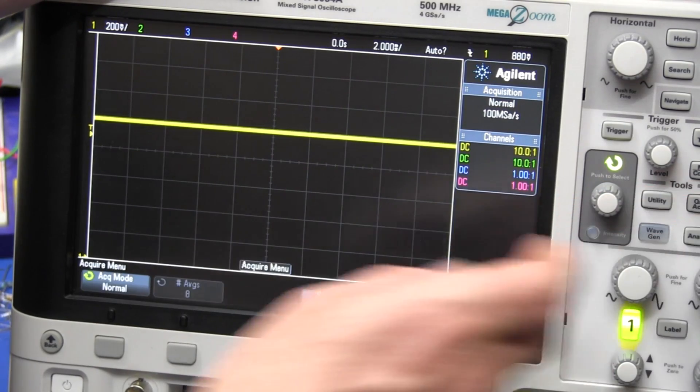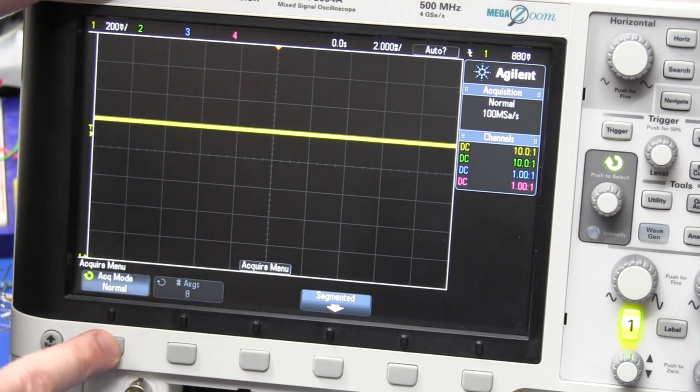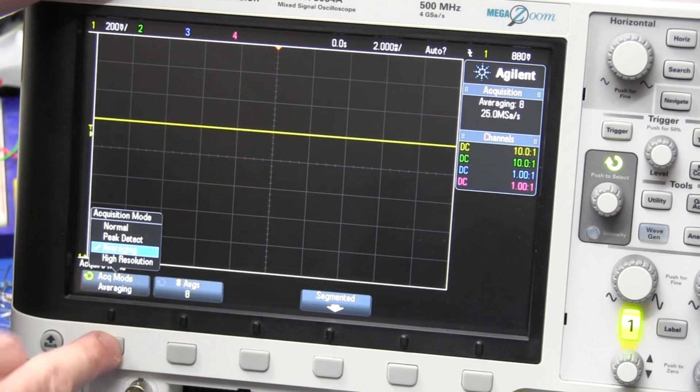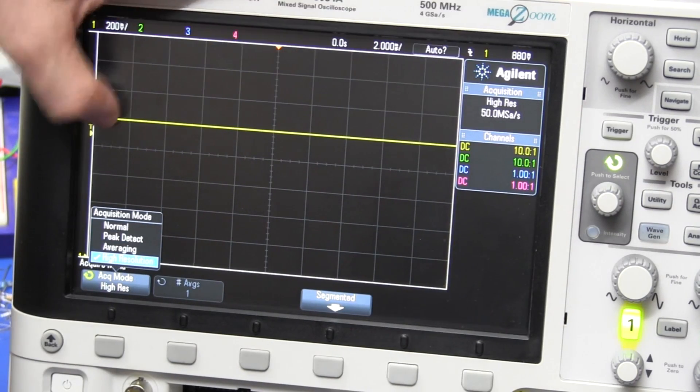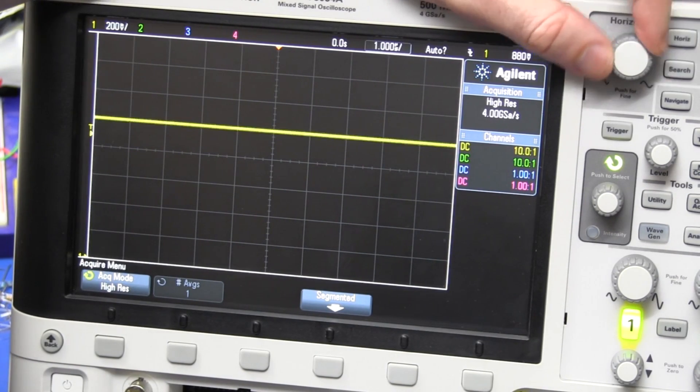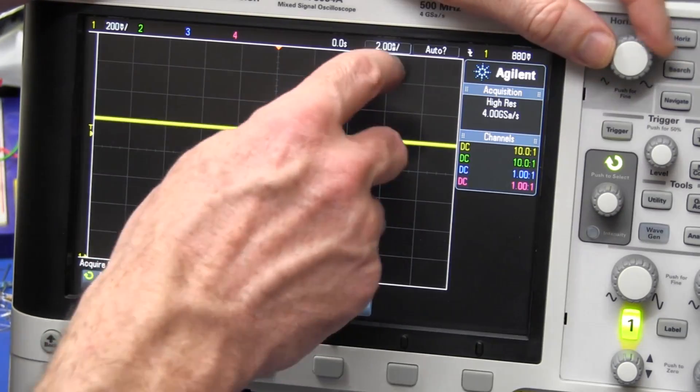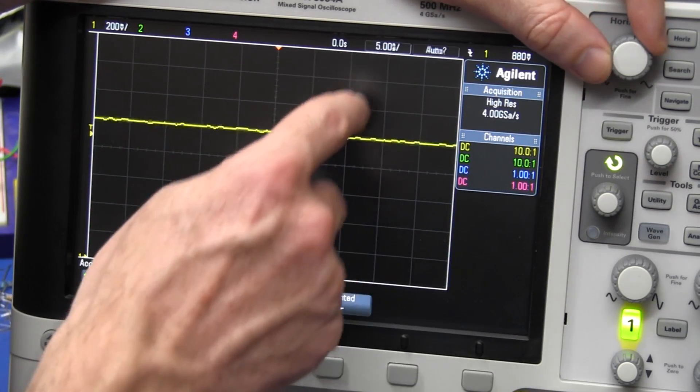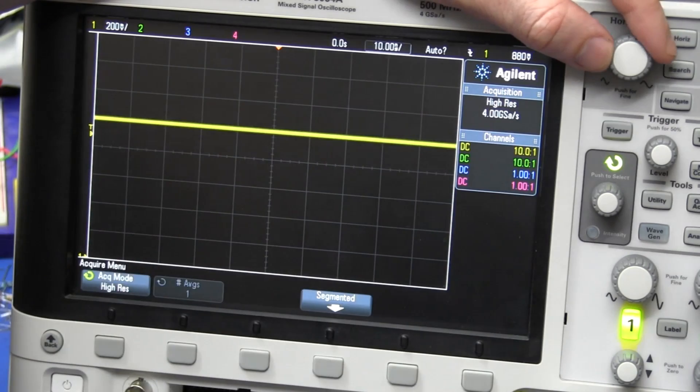But if you go into the acquire menu and you choose the high resolution mode, bang, look, it's cleaned that up very significantly. And at the lower time bases, if you go up to the higher time bases, of course, it's still thick like that.